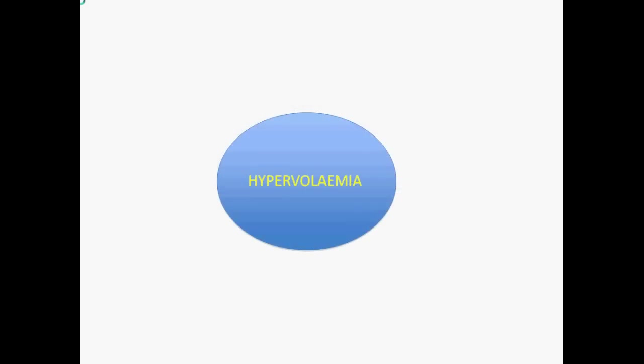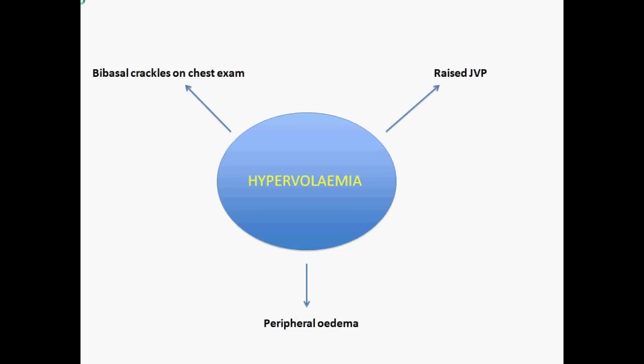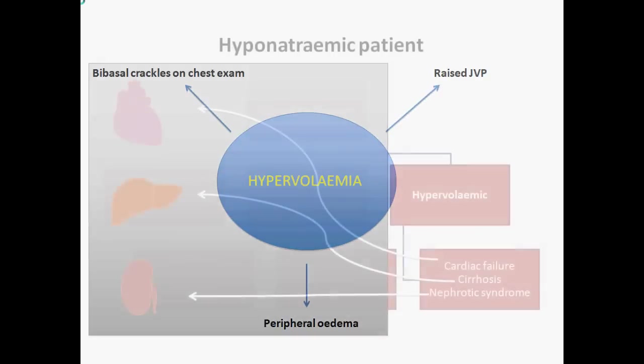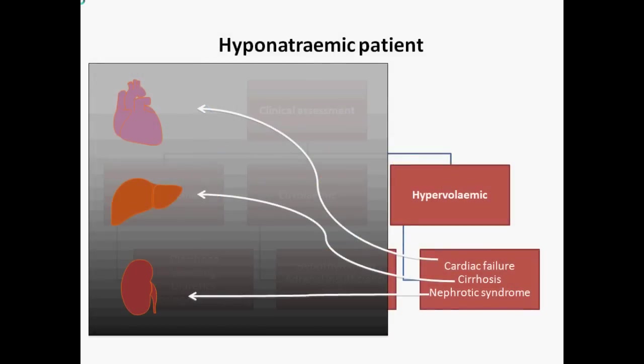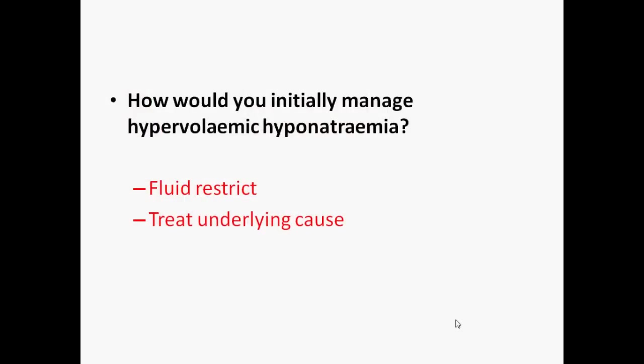If the patient is not hypovolemic, you ask yourself if they are hypervolemic. Can you see any signs of fluid overload? Is the jugular venous pressure elevated? You can auscultate the back of the lungs to listen for crackles. You can look at the legs — is there any evidence of pedal oedema? Is the patient in heart failure? The causes of hypervolemic hyponatremia involve 3 main organs. Managing this involves fluid restriction and treating the underlying cause.